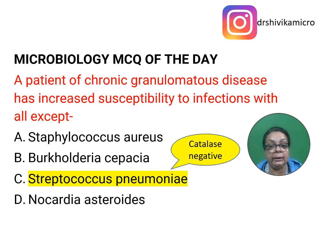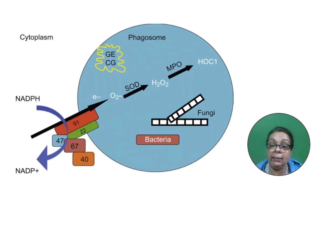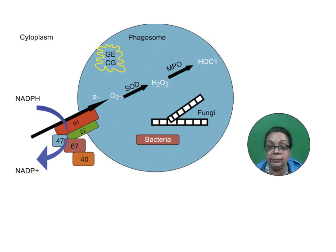The answer is Streptococcus pneumoniae because it is catalase negative. In CGD, there is defective reactive oxygen species production to kill microorganisms because of a defect in the NADPH oxidase enzyme.